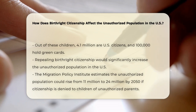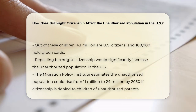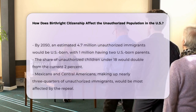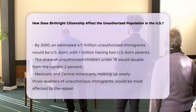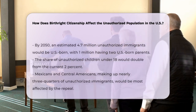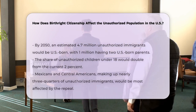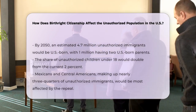This increase would be due to the creation of a self-perpetuating class of unauthorized immigrants. By 2050, there would be 4.7 million unauthorized immigrants who were born in the U.S., with 1 million having two U.S.-born parents. This would double the unauthorized share of the under-18 child population from its current 2%.